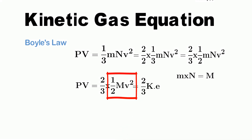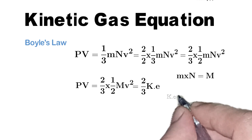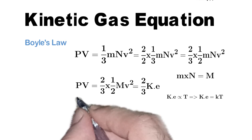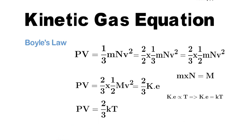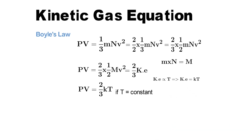The term 1/2 MV² is the kinetic energy. So the equation becomes PV = 2/3 × kinetic energy. The kinetic energy of the gas molecules is directly proportional to the temperature of the gas. So kinetic energy equals kT, where k is the constant of proportionality and T is the temperature. Substituting this, we get PV = 2/3 kT. On the right-hand side, 2, 3, and k are all constants. If we keep temperature constant, the whole right-hand side becomes constant, giving us PV = constant. And this is Boyle's law.